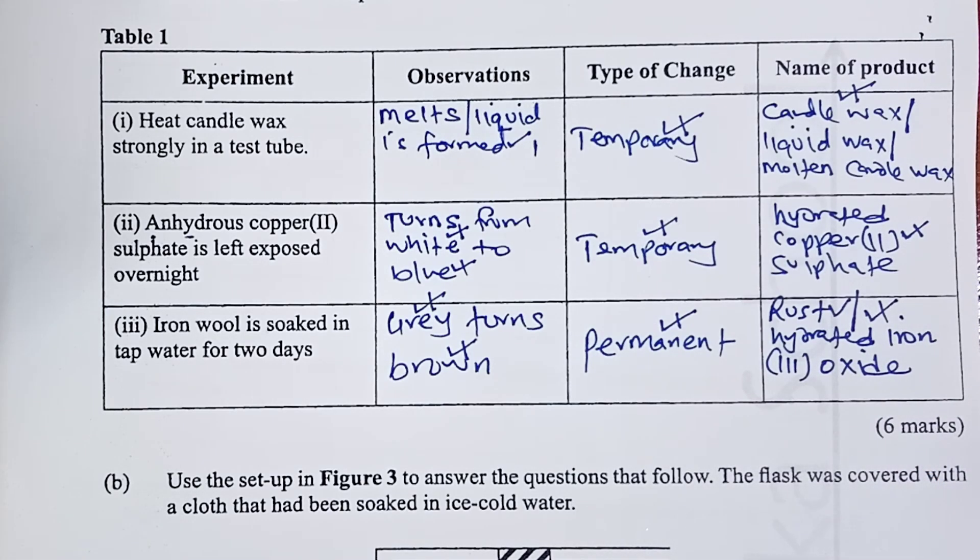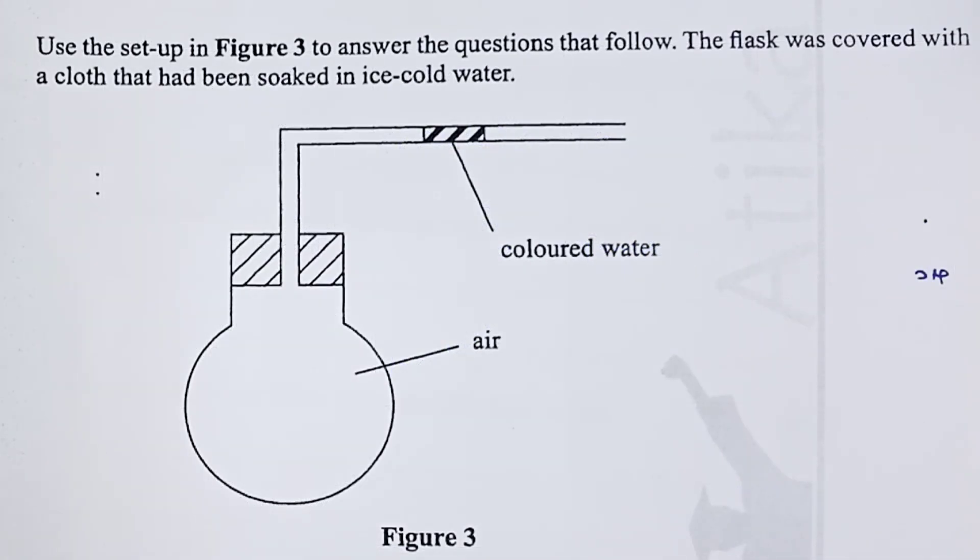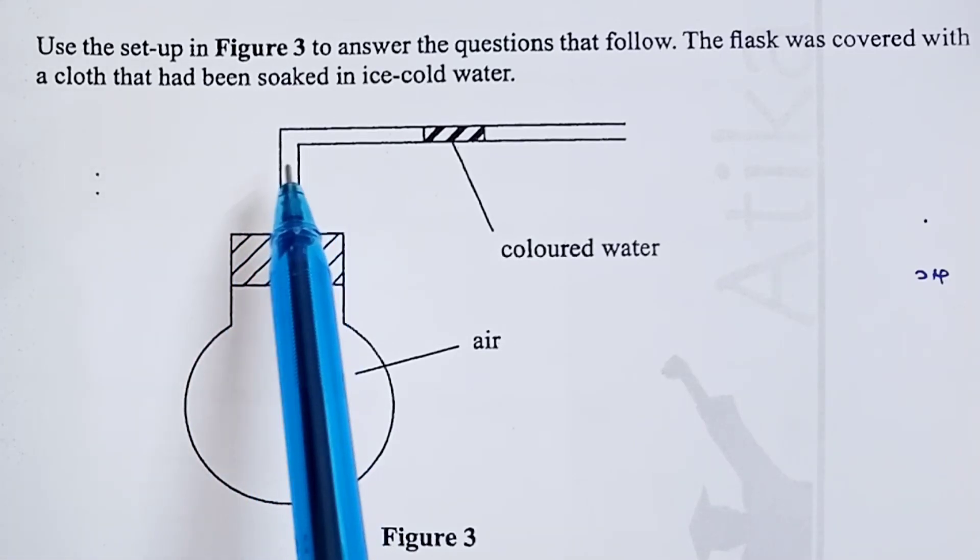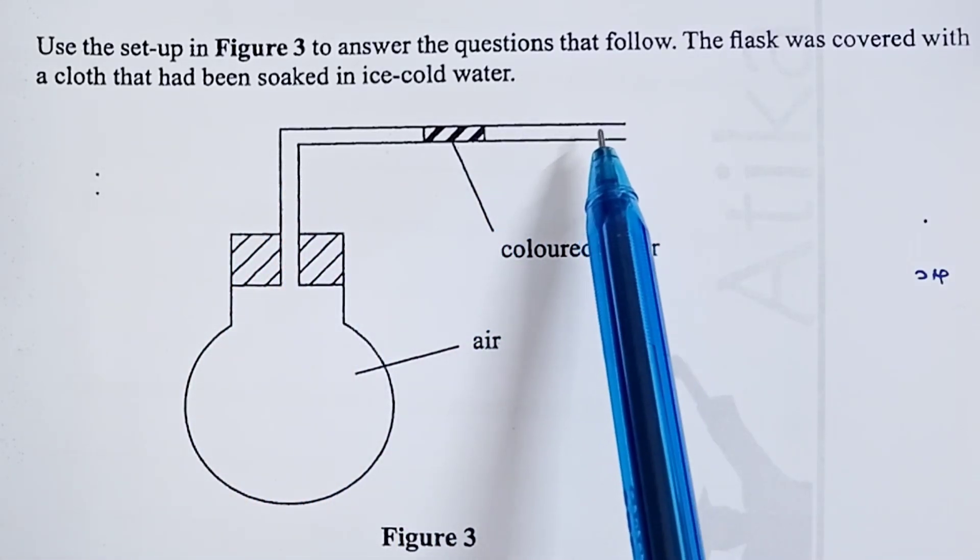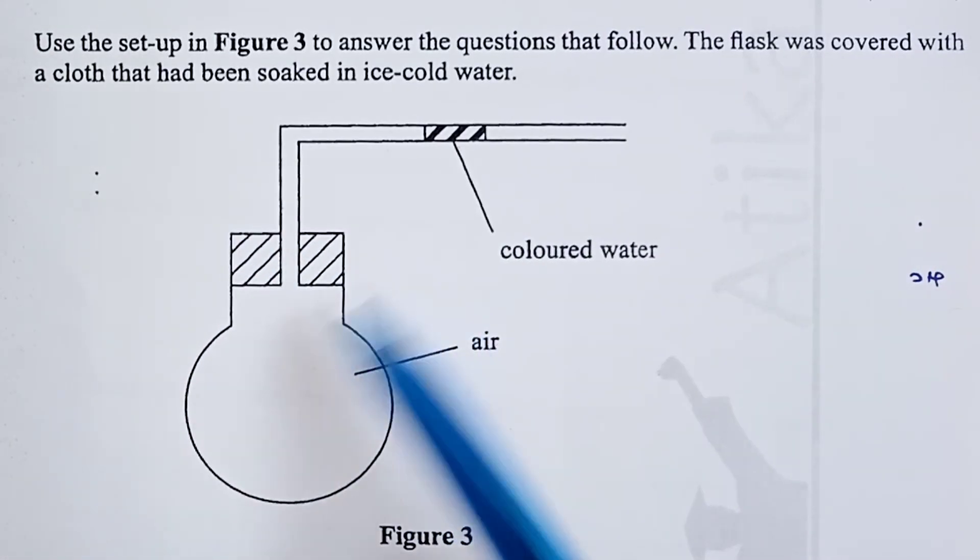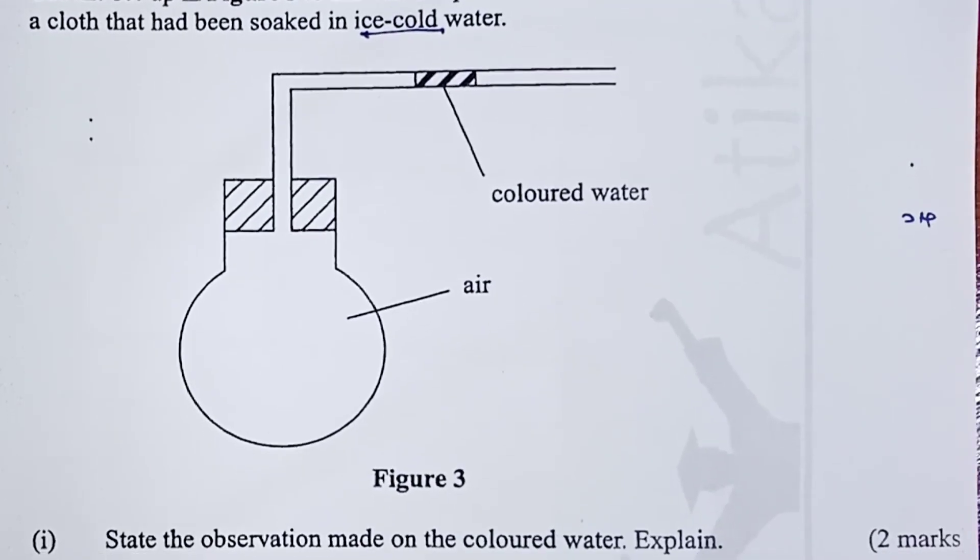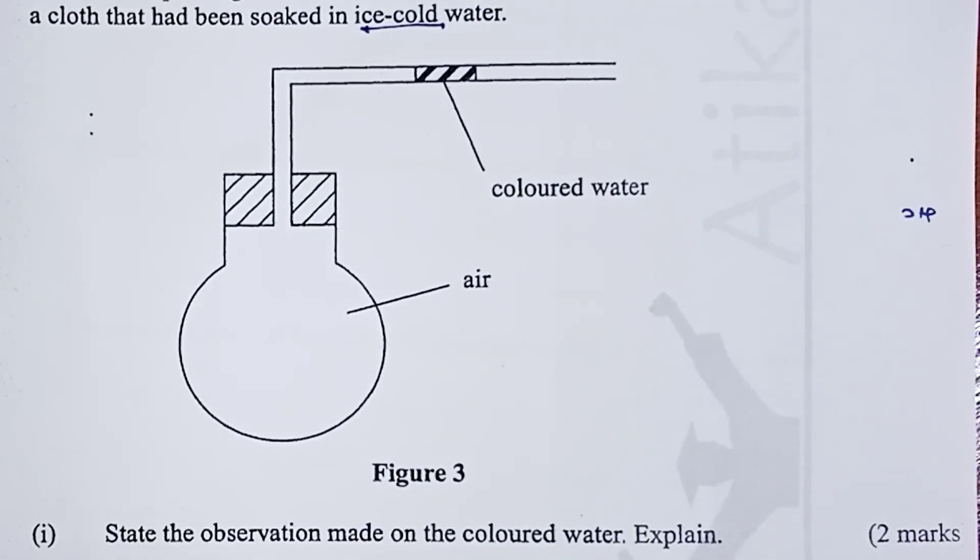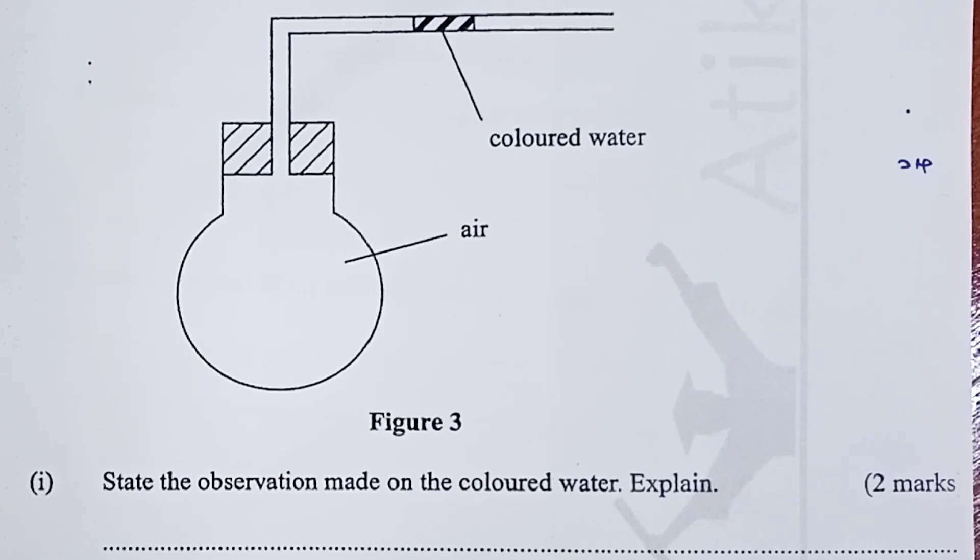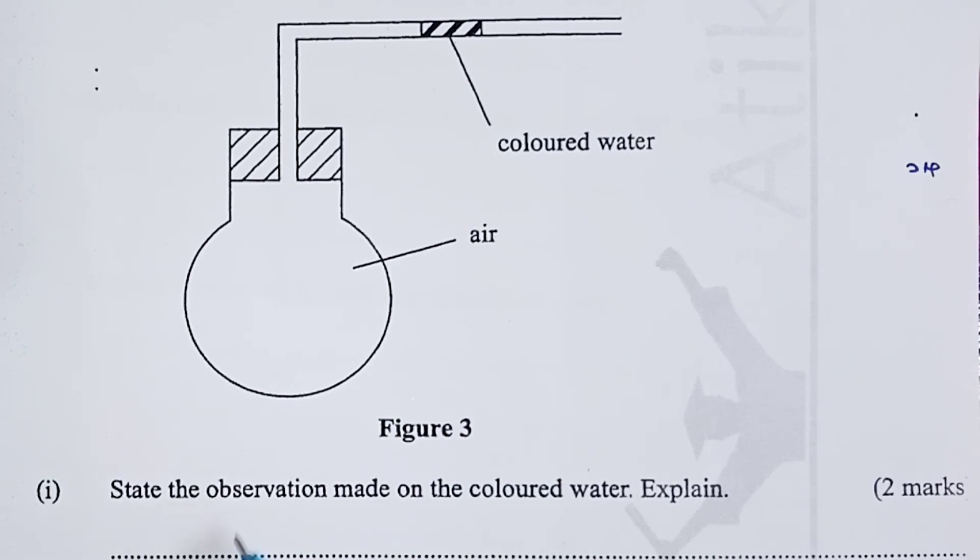To question B, we are asked to use the setup in figure 3 to answer the questions that follow. The flask was covered with a cloth that had been soaked in ice-cold water. Roman 1, state the observations made on the colored water.